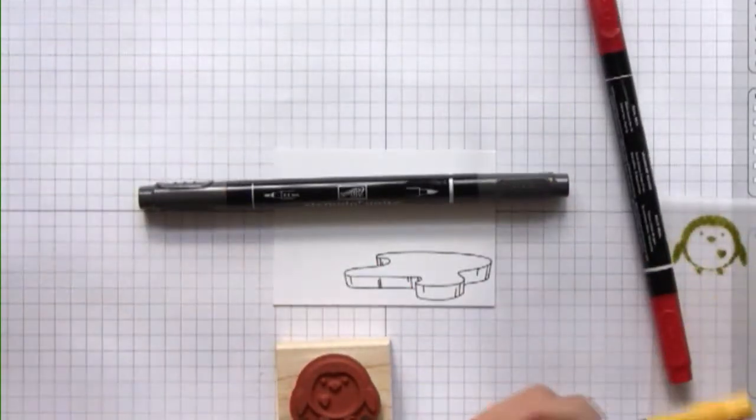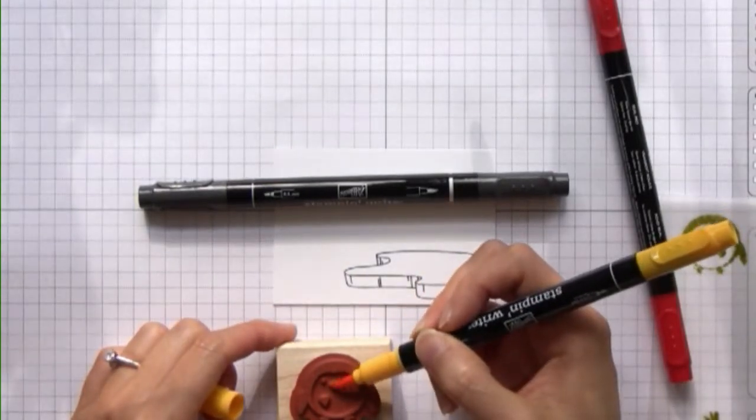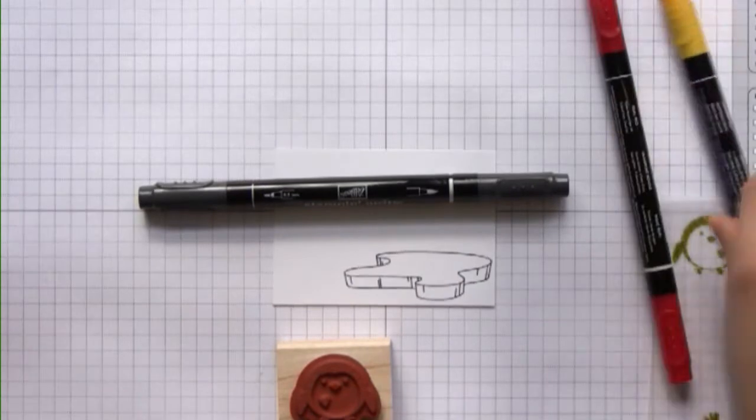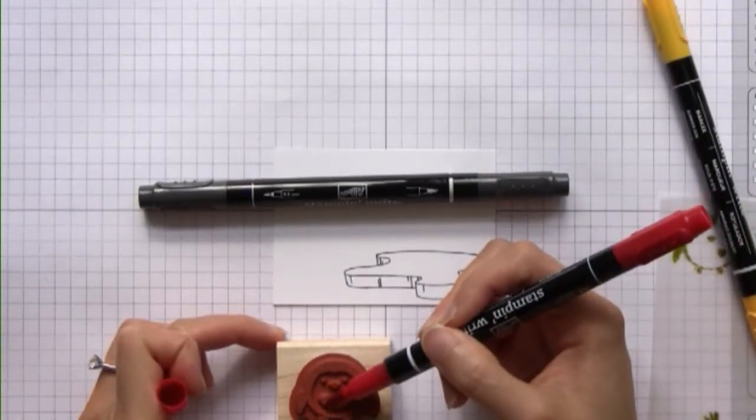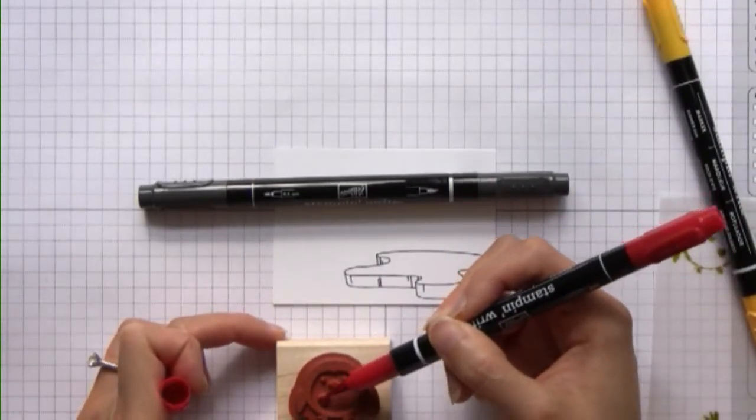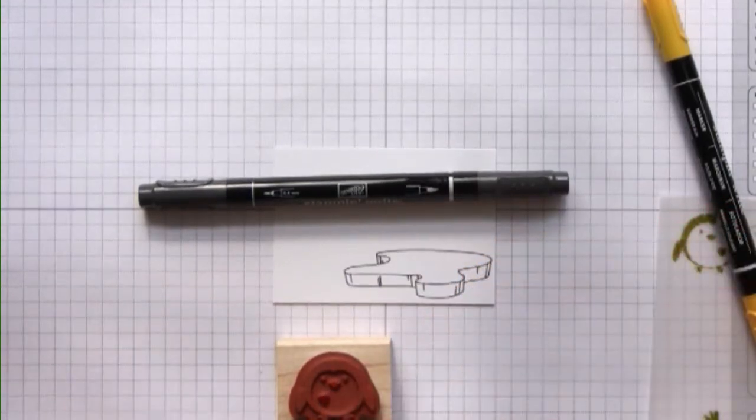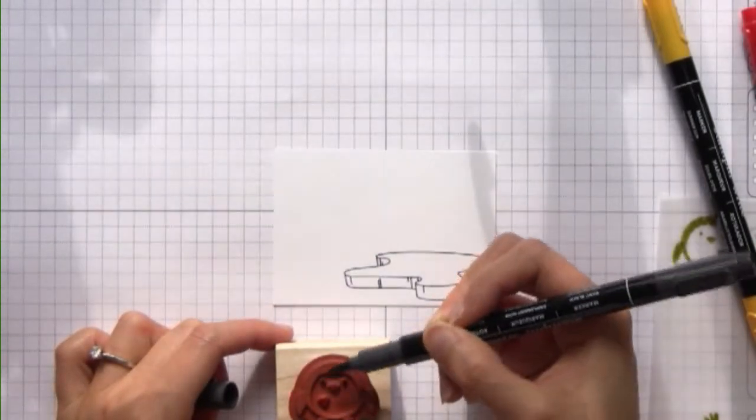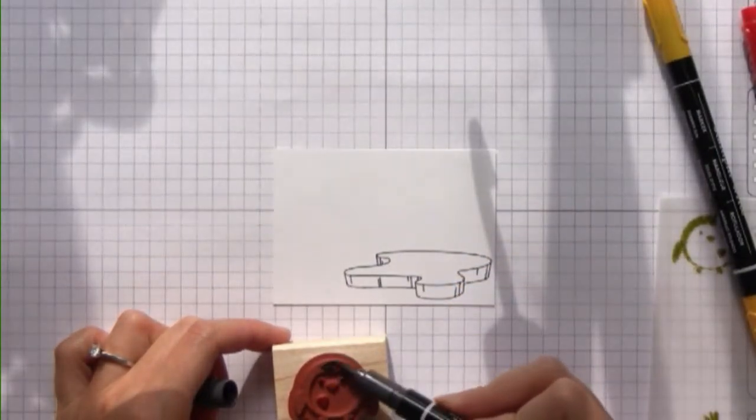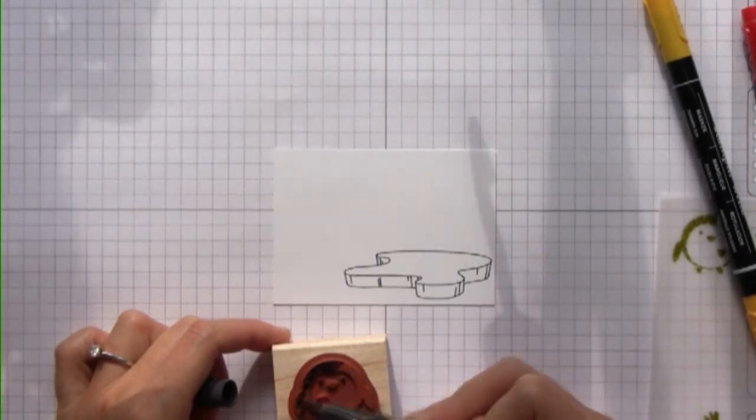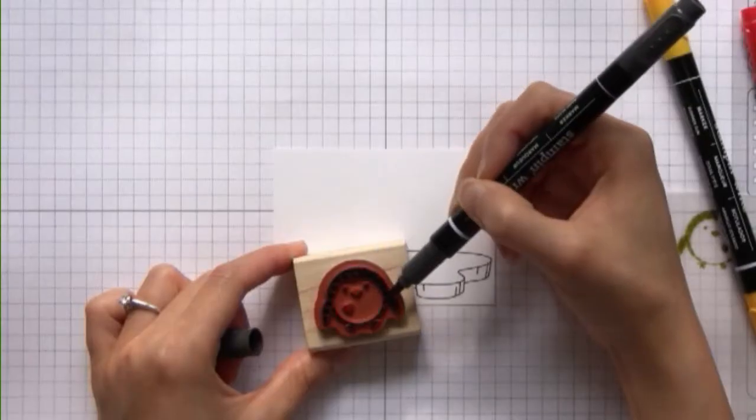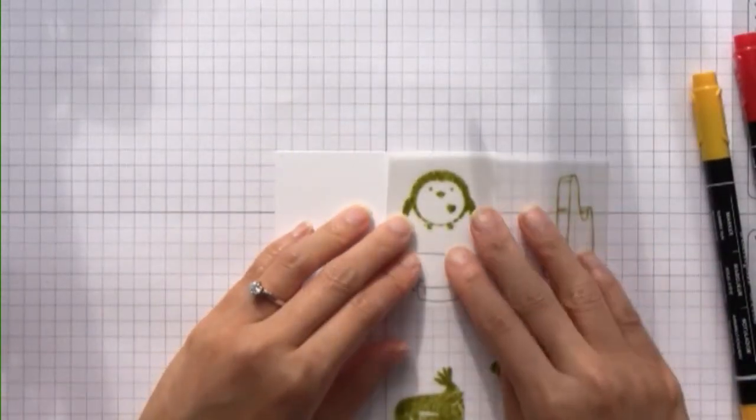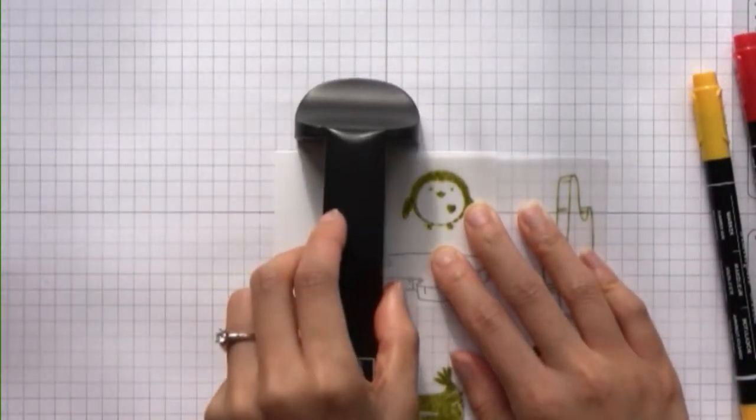First I'm going to take my Summer Sun marker and color in the beak. Then I'm going to take my Real Red marker and color in the heart. And then Basic Black to color in the eyes and the body. Set this down so that's all ready to go.